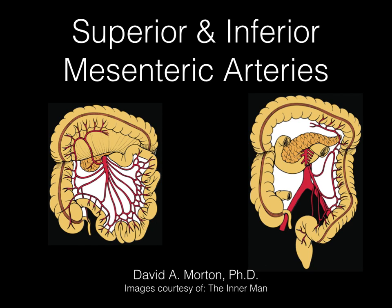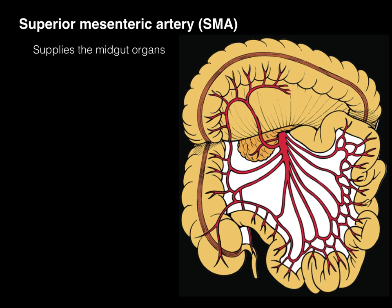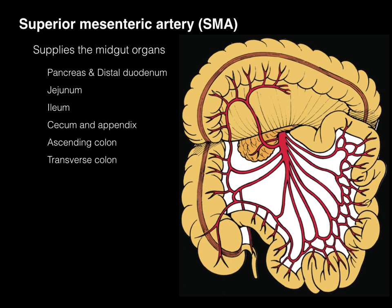We're now talking about the superior and inferior mesenteric arteries, which are the arteries that supply the midgut and hindgut respectively. The superior mesenteric artery, or SMA, supplies midgut organs which include the pancreas and distal duodenum.